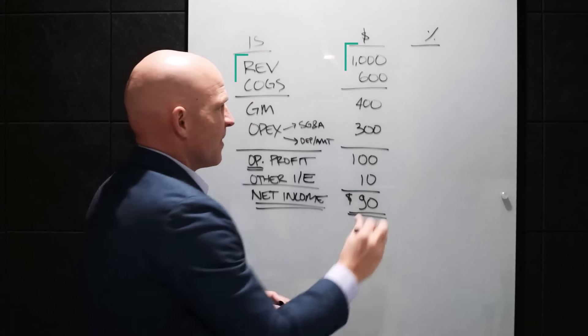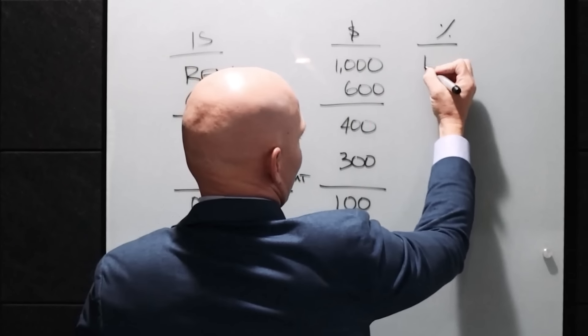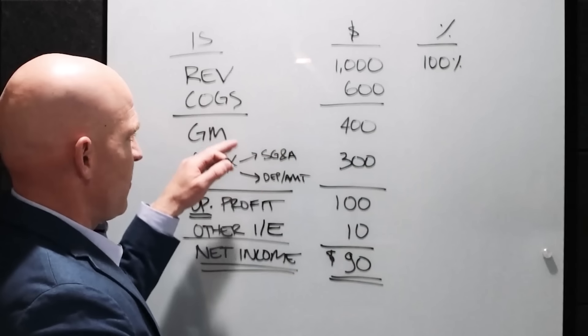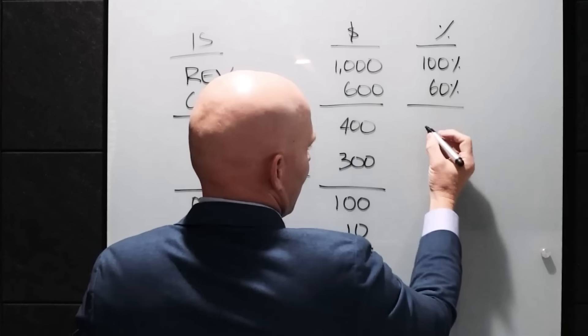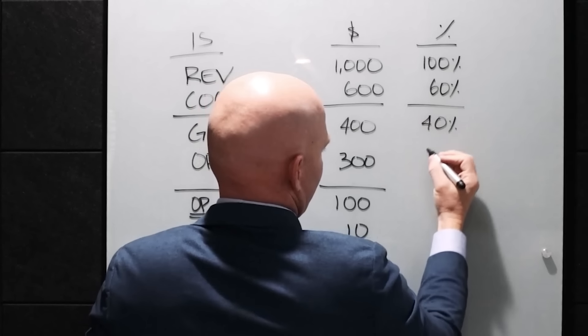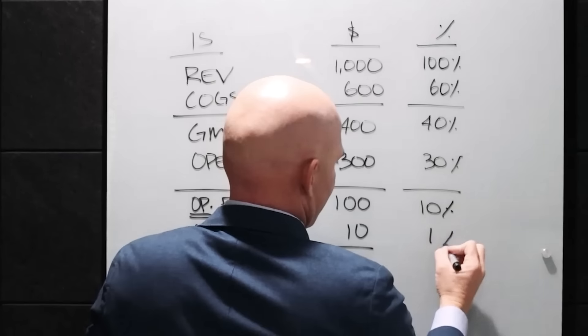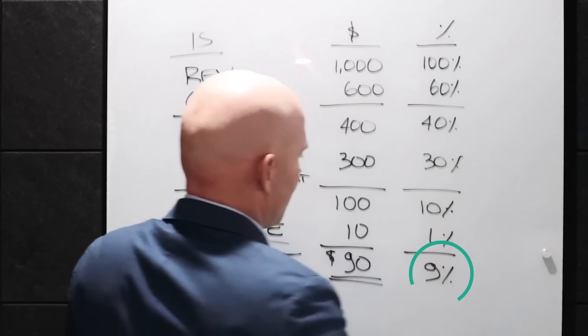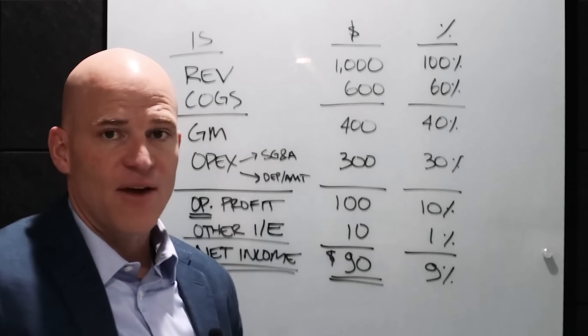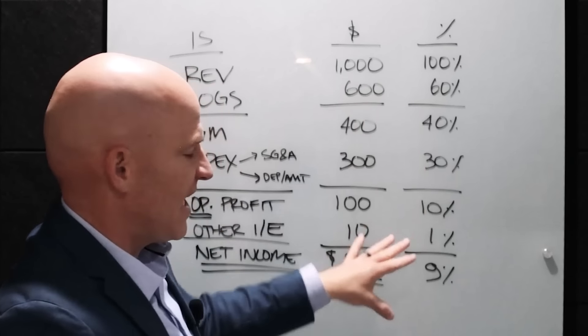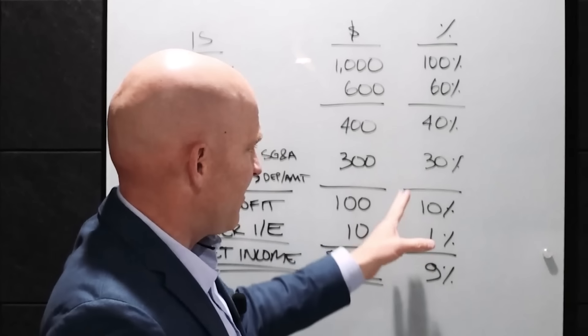So now let's go and express all these numbers as a percentage of revenue. So if you're doing this in Excel, you can take each of these cells and divide it by revenue. Just lock it on revenue here. And so revenue divided by revenue is 100%. Like I said, we're going to divide everything by revenue. Cost of goods sold divided by revenue is going to be 60%. 400 divided by revenue, the 1000, is going to be 40%. And I'm just going to go down the line. Everything is divided by revenue. So I can express all this in terms of revenue.